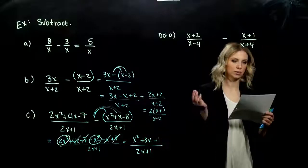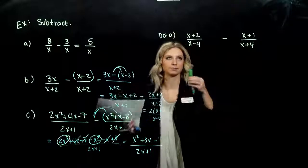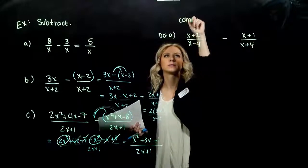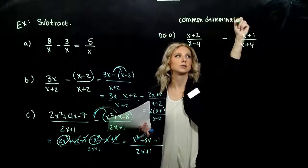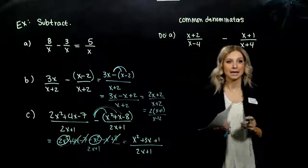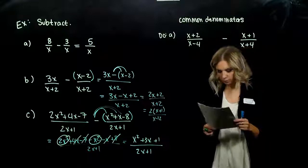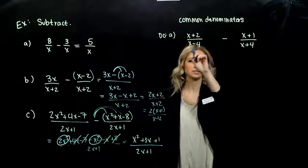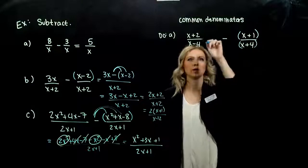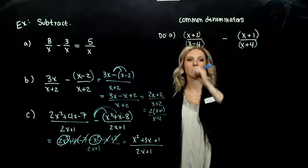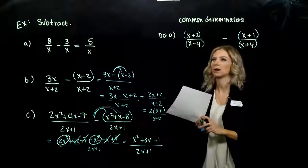To subtract rational expressions with different denominators, we have to work towards common denominators. Group together what comes together, because it is very important. First example — do we have common denominators? No, and right off the bat I'm going to group together what comes together everywhere, just to be safe. We need to build common denominators.